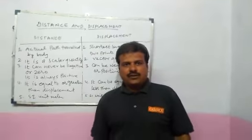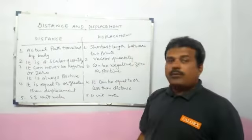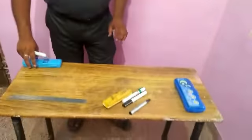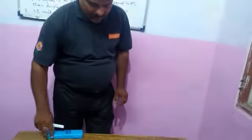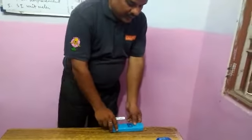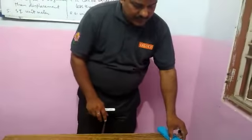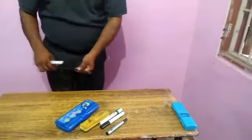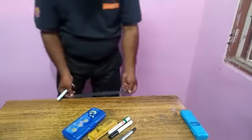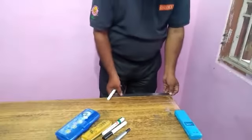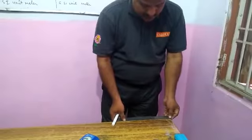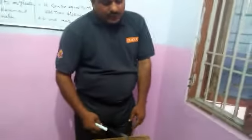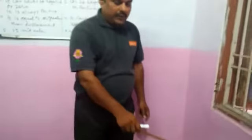What is distance? Distance is the actual path covered by a body. For example, this body is moving on the table and it turns. So, this body covers a distance of 30, 60, and 20 — that is 85 — and after that 30. So, 115 cm. This is the actual path covered by the body.